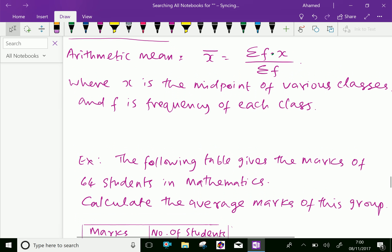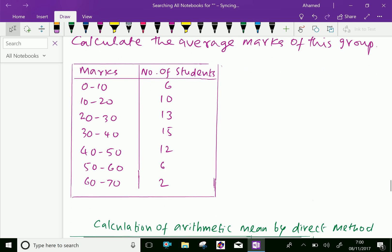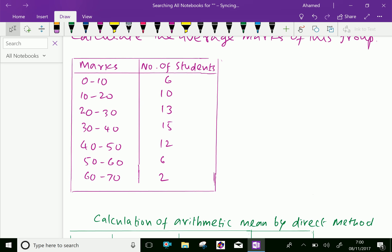Let us do an example for a direct method for finding arithmetic mean. The following table gives the marks of 64 students in mathematics. Calculate the average mark of this group.